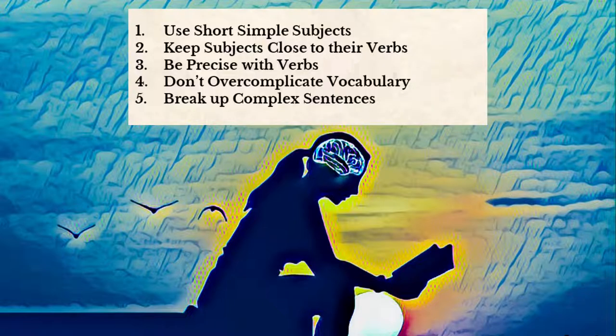Let's review the conventions we applied to make this writing more cognitively digestible — conventions you can apply to your own writing. First, use short, simple subjects whenever possible; they are easier for the reader to process. Second, keep subjects close to their verb, so the reader doesn't have to juggle the subject in their mind too long while waiting for the verb — this helps your readers parse sentences more easily. Third, be precise with your verbs; using verbs that are economical and precise instead of wordy or vague will help your reader focus on the precise thoughts you're trying to convey.